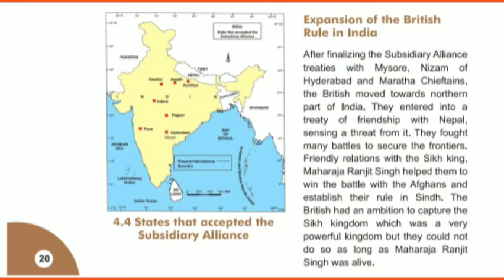Now we will learn about the expansion of British rule in India. After finalizing the Subsidiary Alliance treaties with Mysore, the Nizam of Hyderabad, and the Maratha chiefs, the Britishers moved to the north side of India.